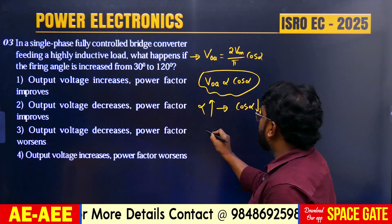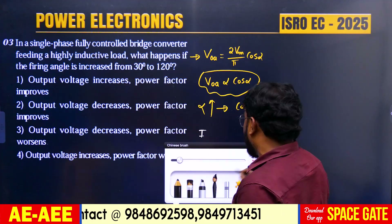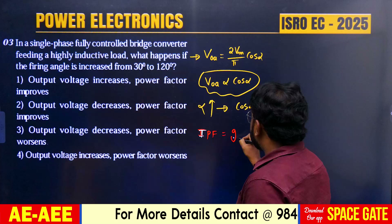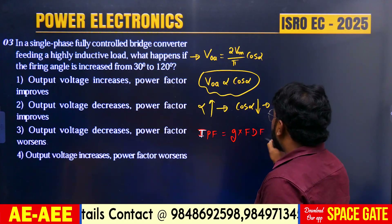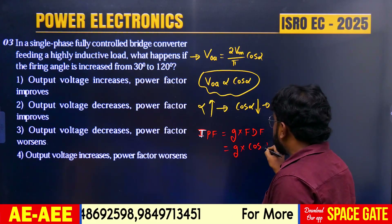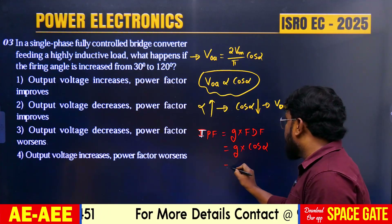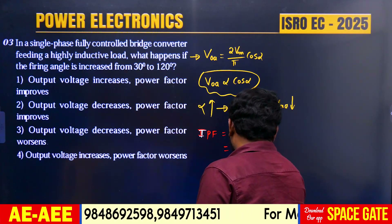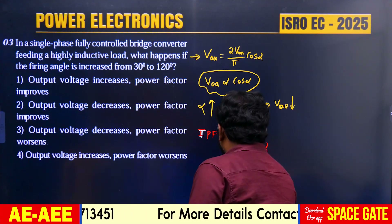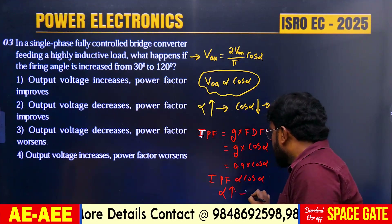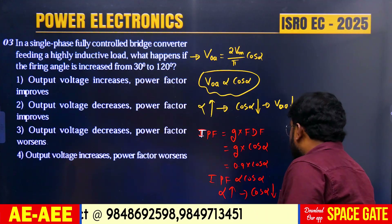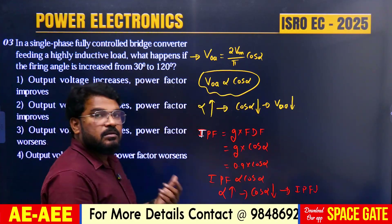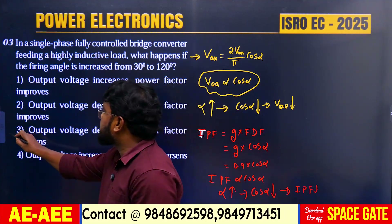Regarding the power factor: the input power factor equals the distortion factor G multiplied by the fundamental displacement factor, where the fundamental displacement factor is cos α. The distortion factor equals 0.9, so input power factor = 0.9 × cos α. Input power factor is also directly proportional to cos α. As alpha increases, cos α decreases, so the input power factor also decreases. Answer: output voltage decreases and input power factor decreases — Option 3 is correct.